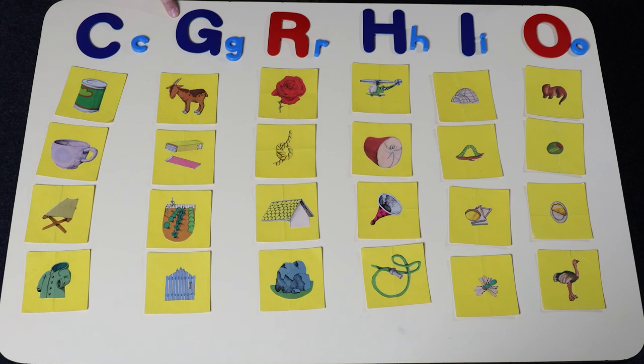The name of this letter is G. The sound it makes is G, G. Goat, G, gum, G, garden, G, gate.